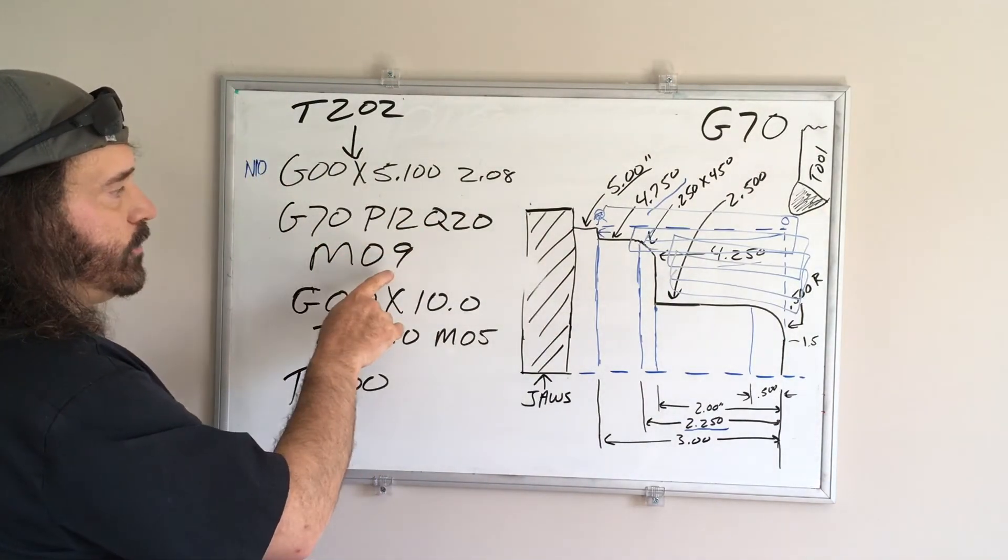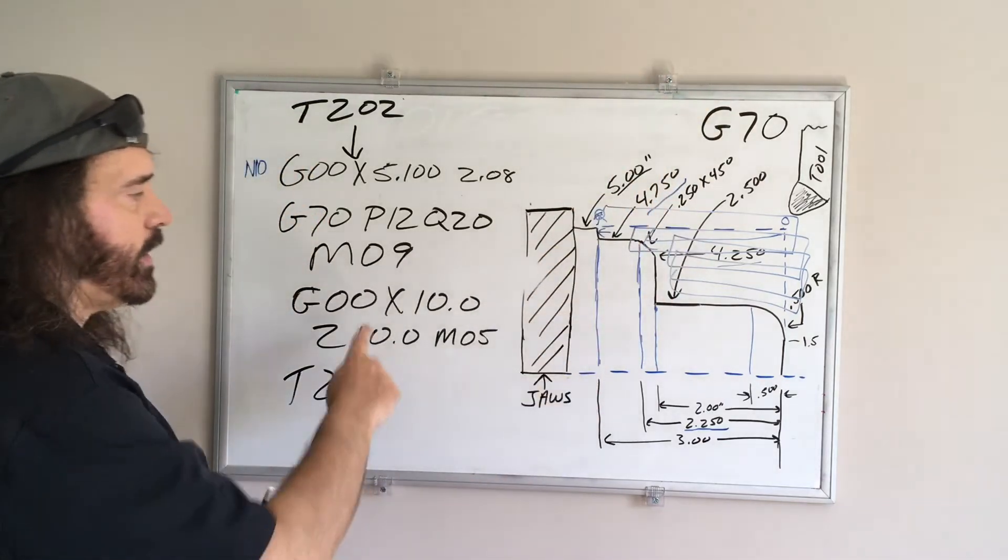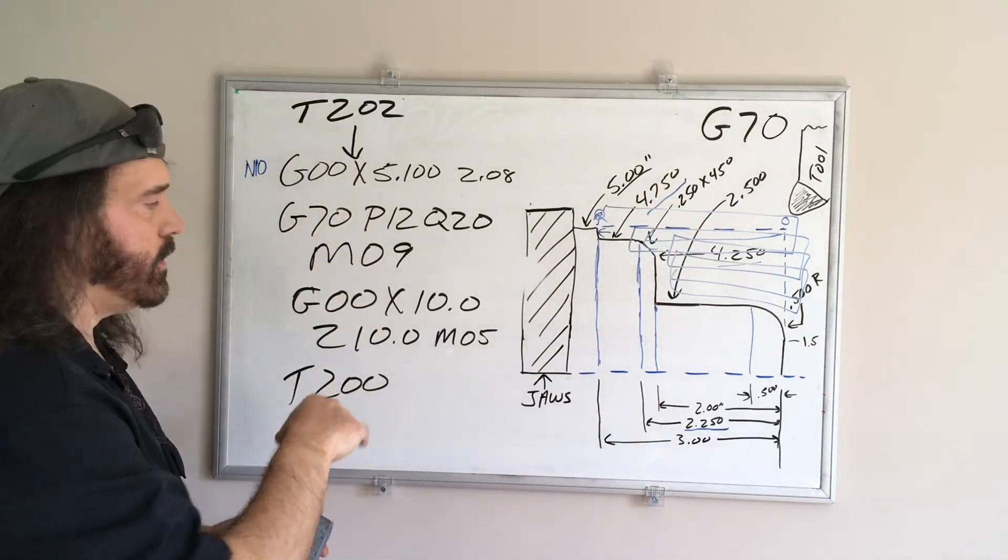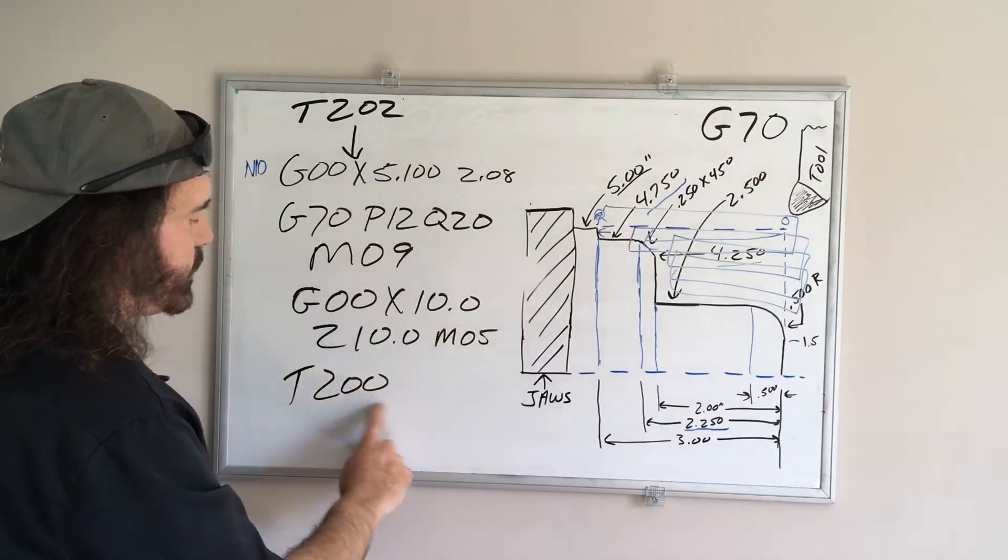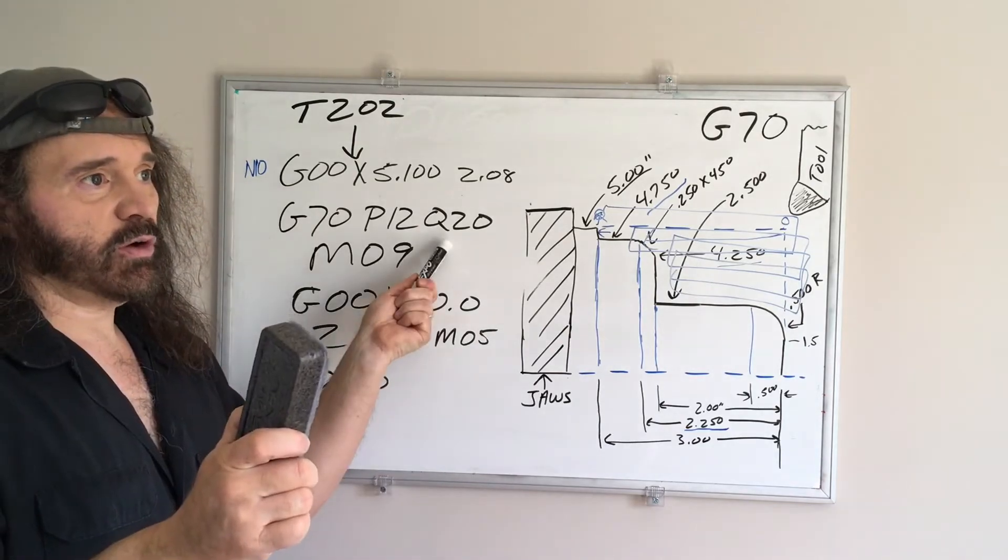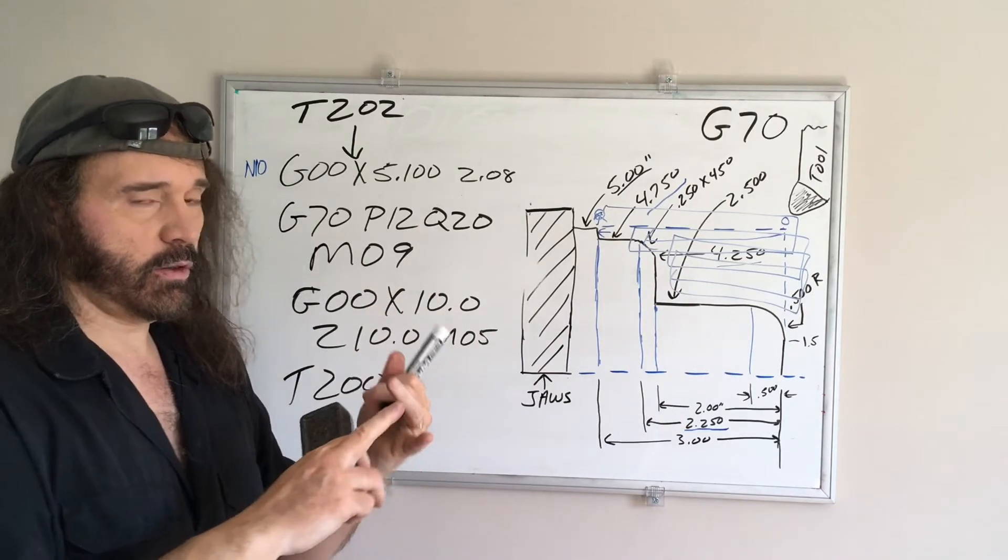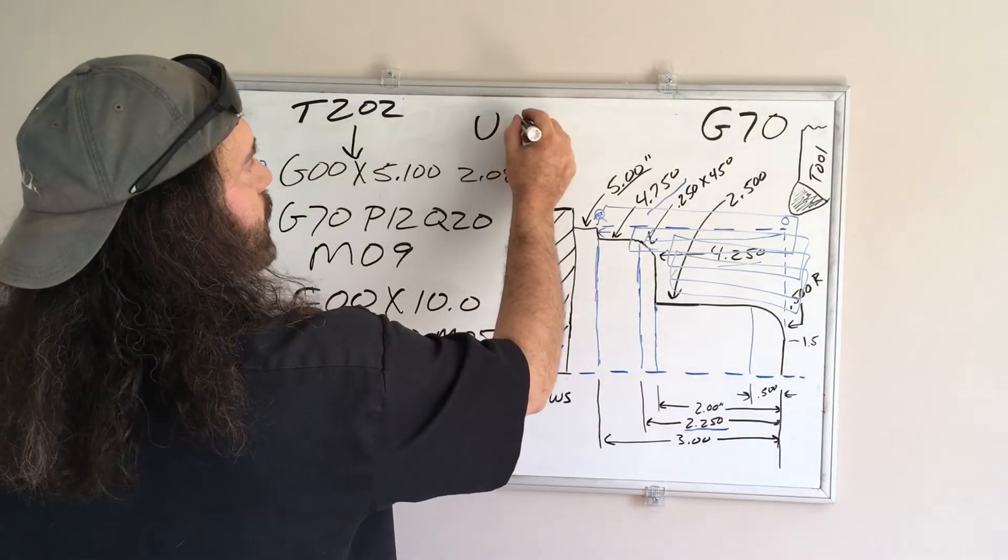And that's all you have to do. Then you turn off your coolant, rapid up your X, I just threw that in there, X10 inches, and then I went 10 inches away, turned off the spindle, cancel the tool, and I'm done.